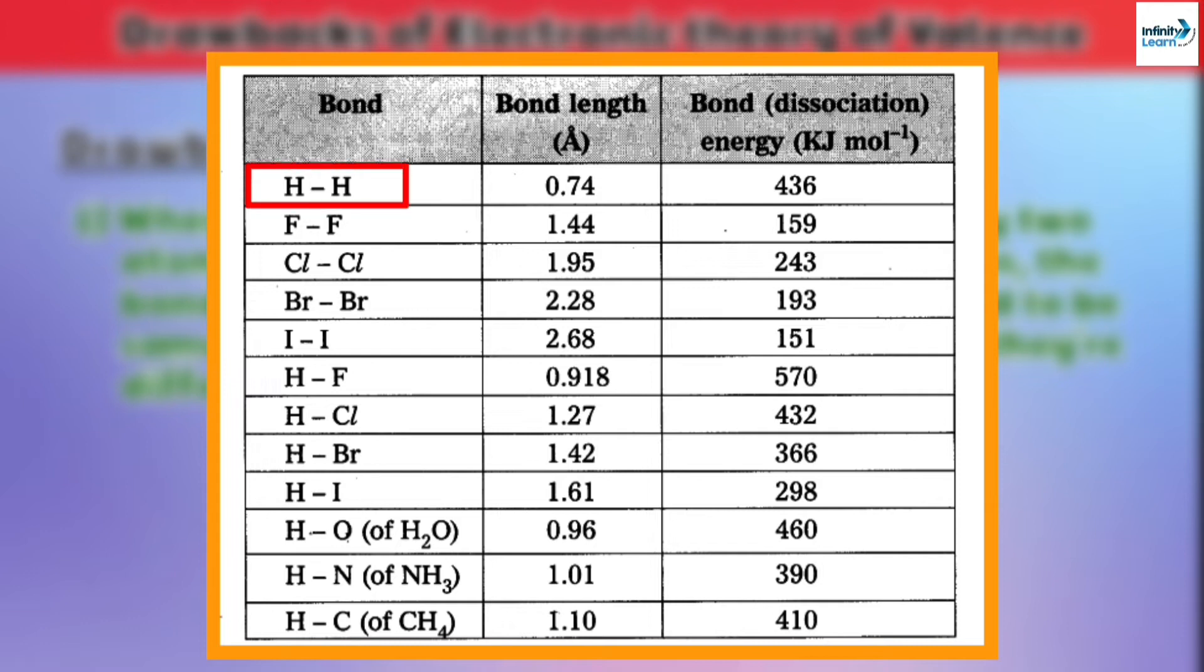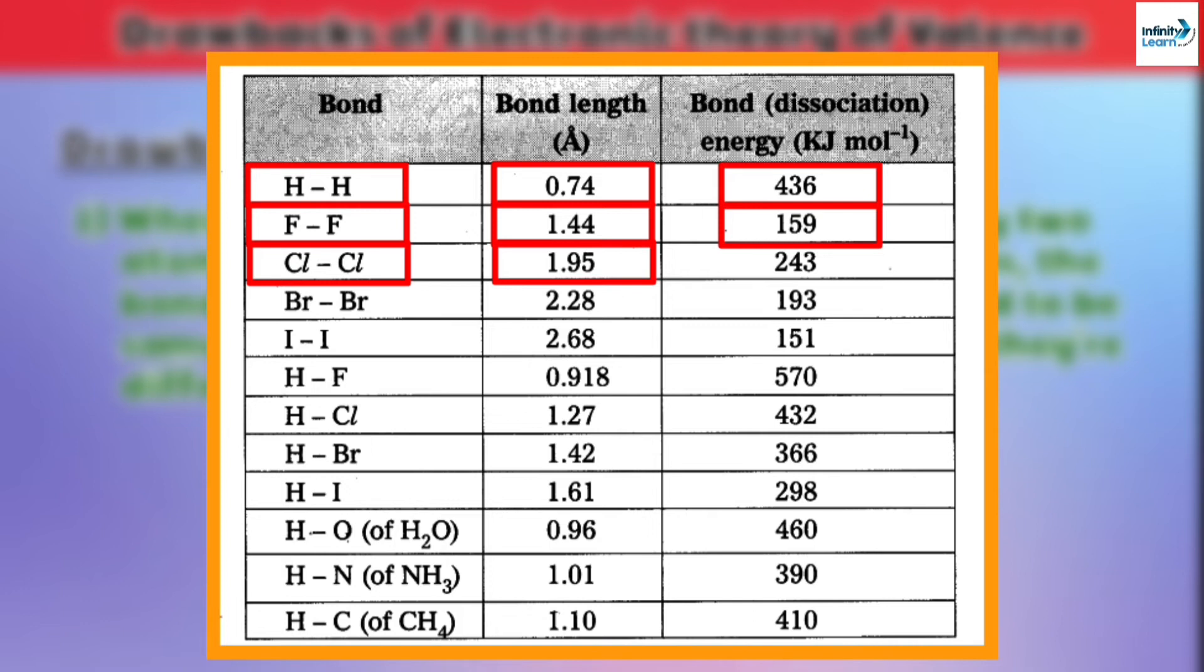You can see here that H2 bond length is 0.74 angstrom and its bond energy is 436 kJ per mole. Similarly, F2 bond length is 1.44 angstrom and its bond energy is 159 kJ per mole. Cl2 bond length is 1.95 angstrom and its bond energy is 243 kJ per mole, and so on.